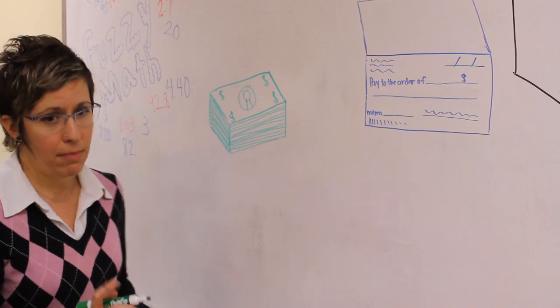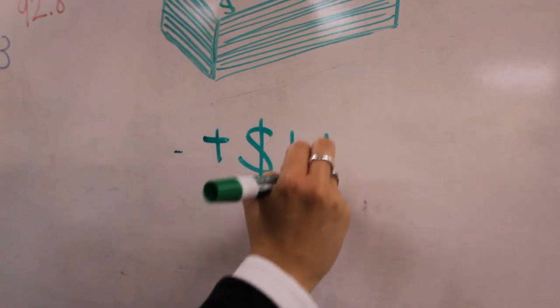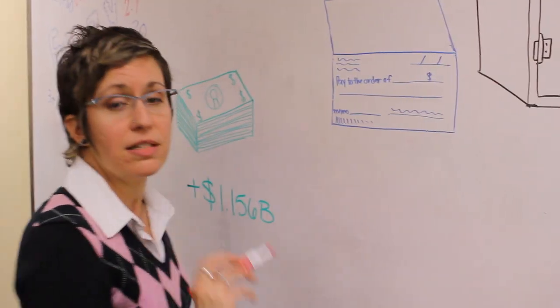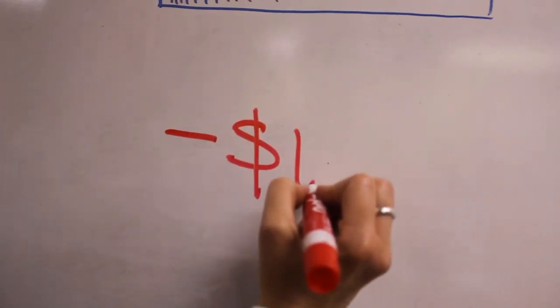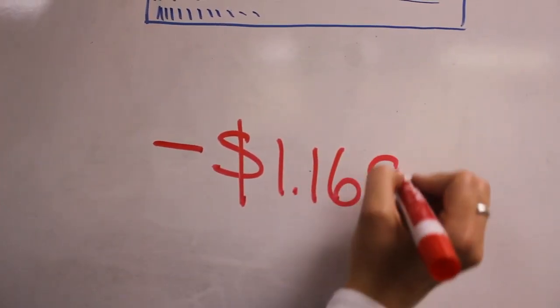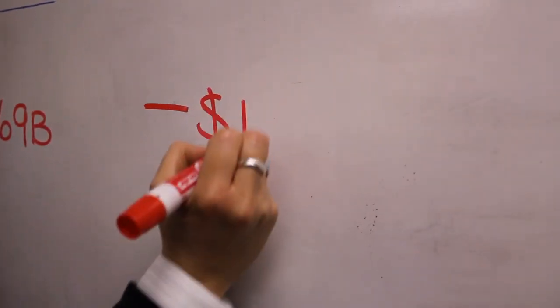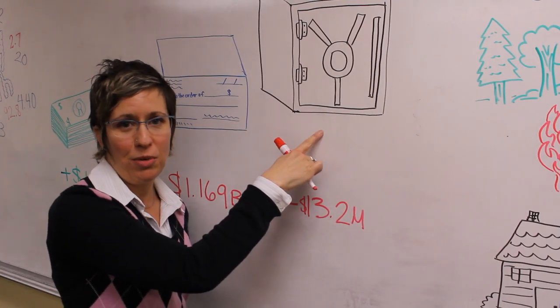the city expected to make $1.156 billion. The city expected to spend $1.169 billion. That means we expected to fall short by $13.2 million. But that's okay. We pulled it from our savings.